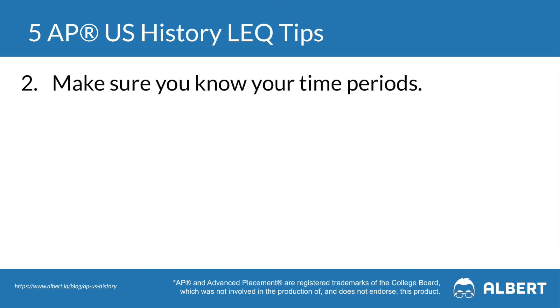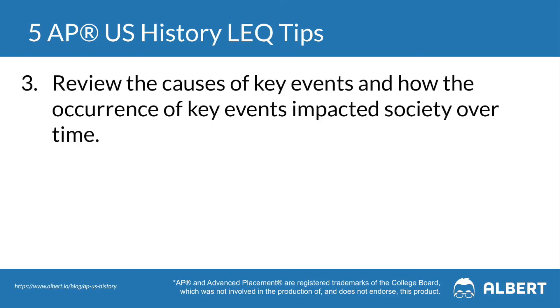Tip two is to make sure that you understand your time periods. Students lose a ton of points when they bring in information that is outside of the time period being asked of them — and they don't even know it at that time — so they keep writing more and more using examples that are beyond the scope of the actual time period. Tip three is to review the causes of key events in history and how the occurrence of these key events then changed society over time — that continuity and change over time concept and skill.